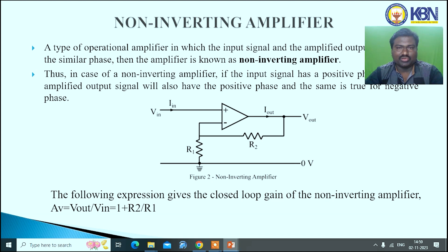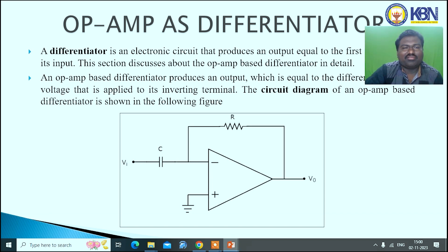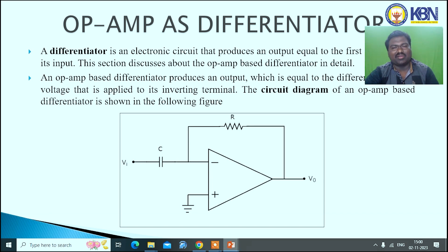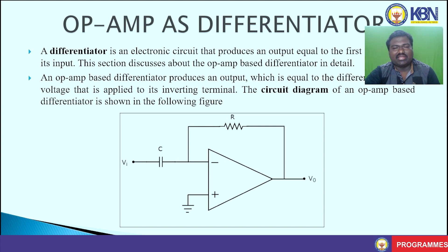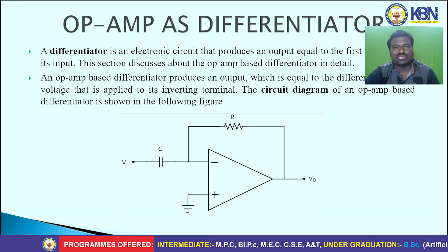One of the applications of the operational amplifier is the differentiator. A differentiator is an electronic circuit that produces an output equal to the differentiation of the input. The differential amplifier produces an output which is equal to the derivative of the input voltage. In the circuit diagram shown, the capacitor is used for input and R is the feedback resistance. The input signal is connected to the inverting terminal.